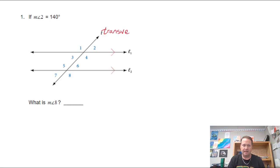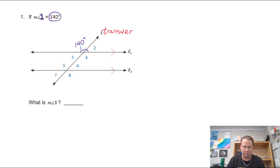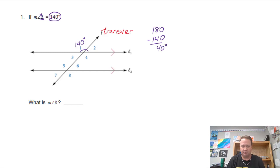When we have these special relationships, if they give me one angle I'm going to know every other angle. So let's make angle one equal 140 degrees. Angle one and angle two are a linear pair — they make a straight line, which is 180 degrees. So if I take 180 and subtract 140, I'm left with 40 degrees. The measure of angle two is 40 degrees.